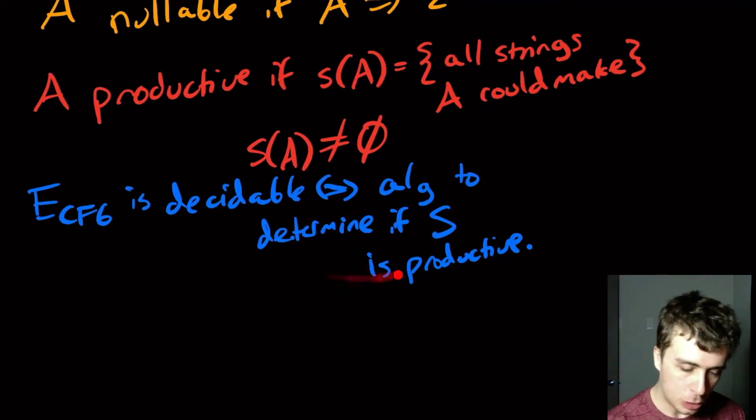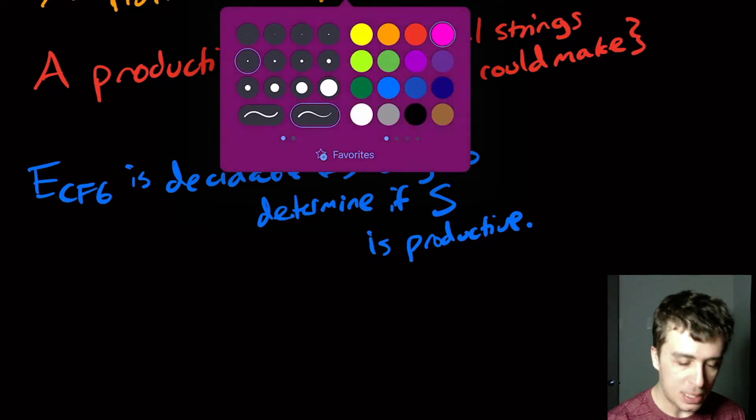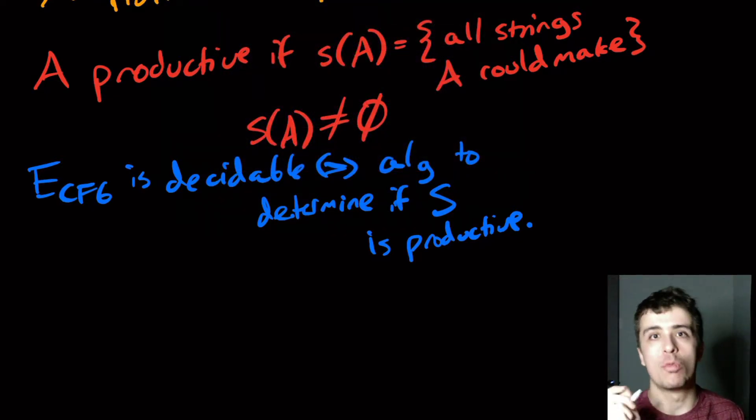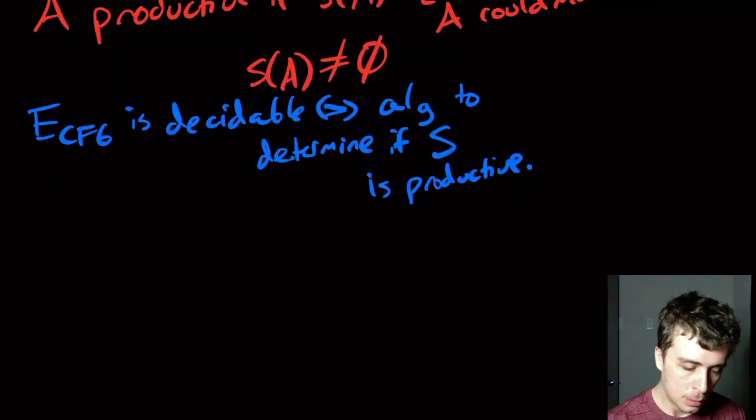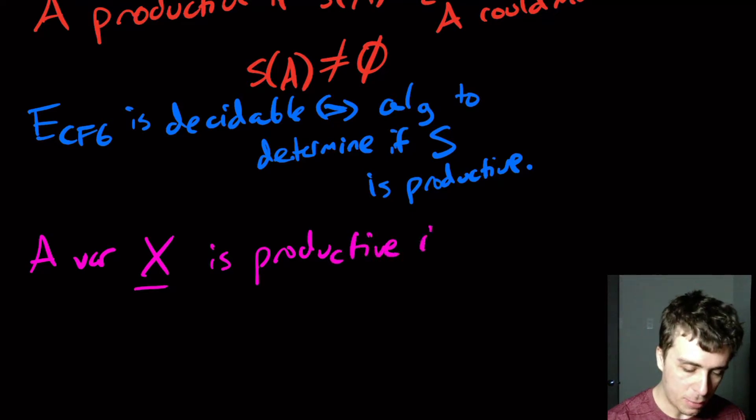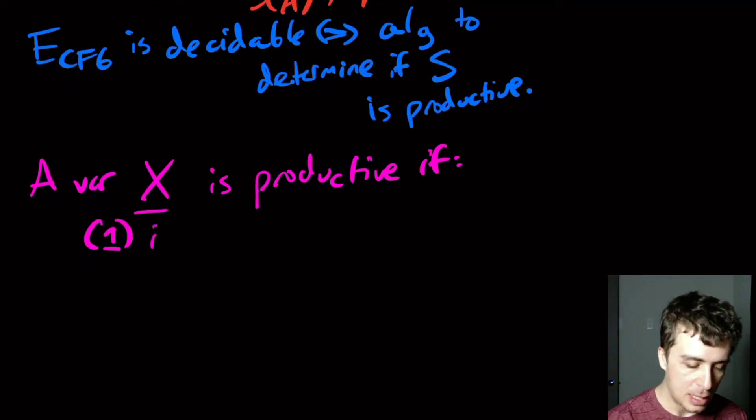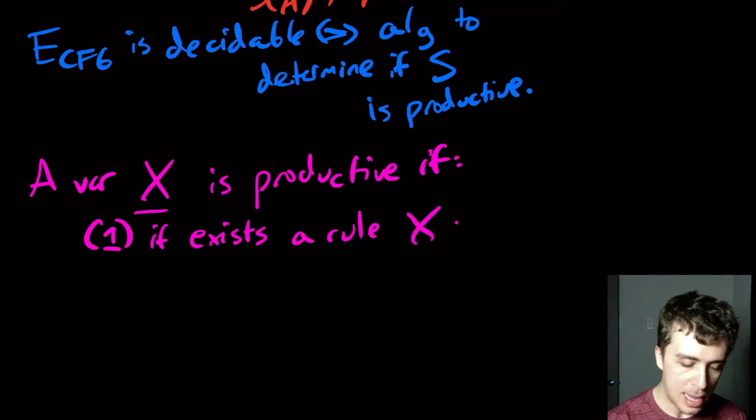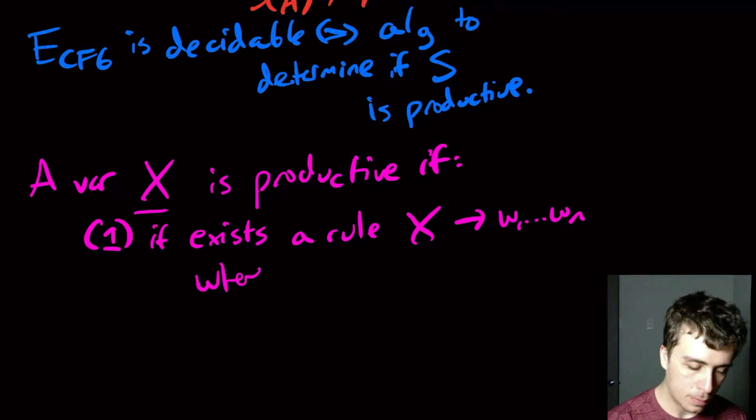All right, so how do we actually determine this? So it actually helps in this circumstance to formally define what productive means. So we say a variable, let's call it x is productive, if one of the following two occurs. So the first one is, if there exists a rule, x goes to w_1 up to w_n, where all of the w_i are terminals.